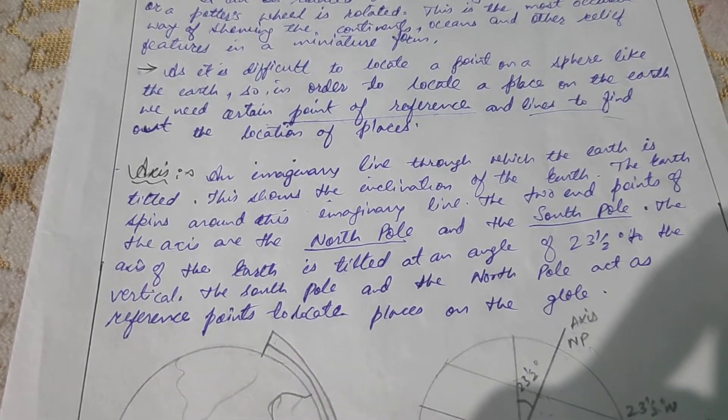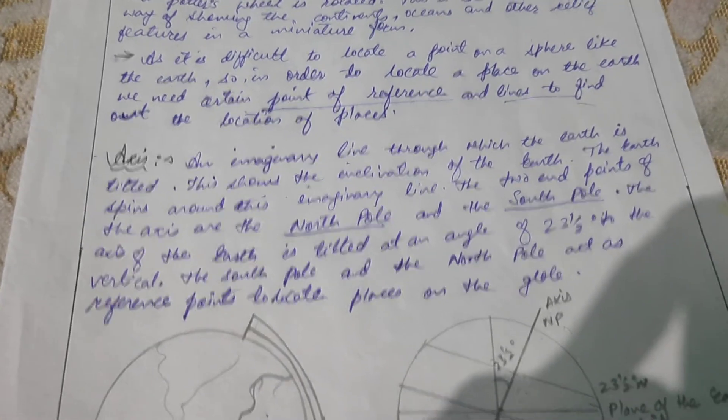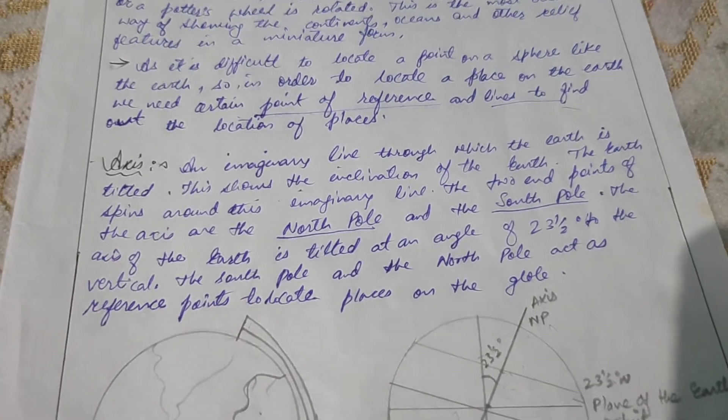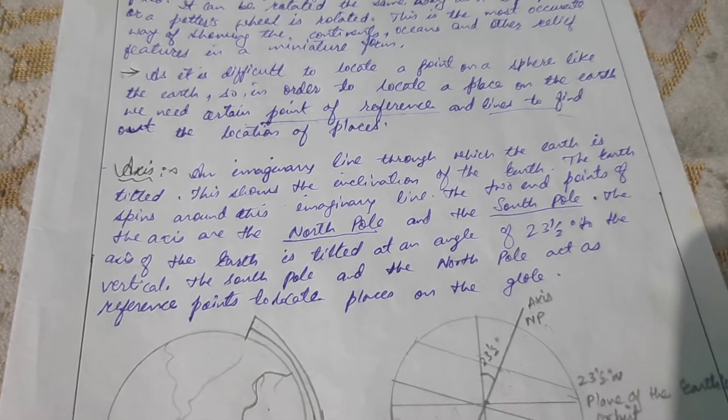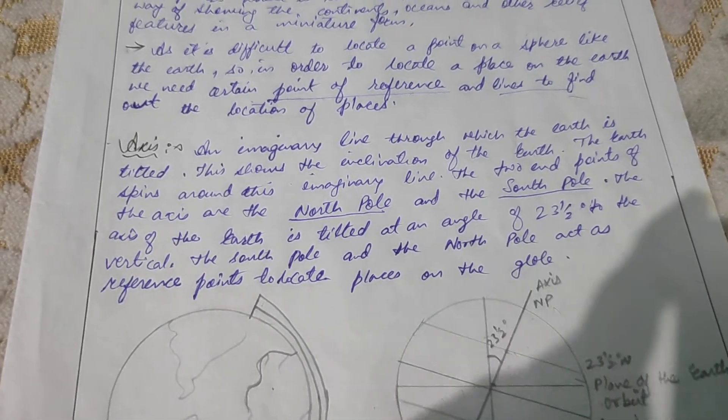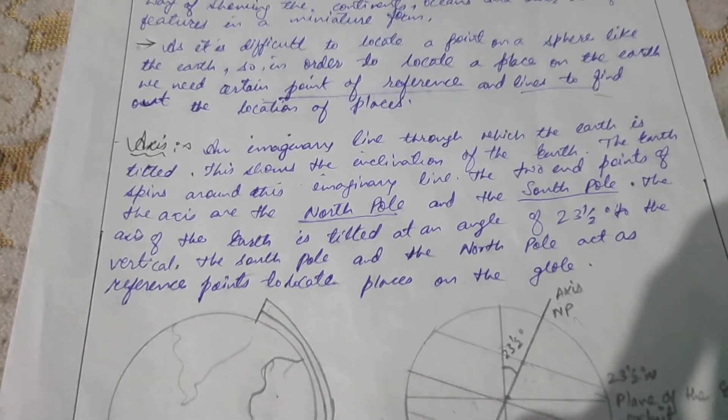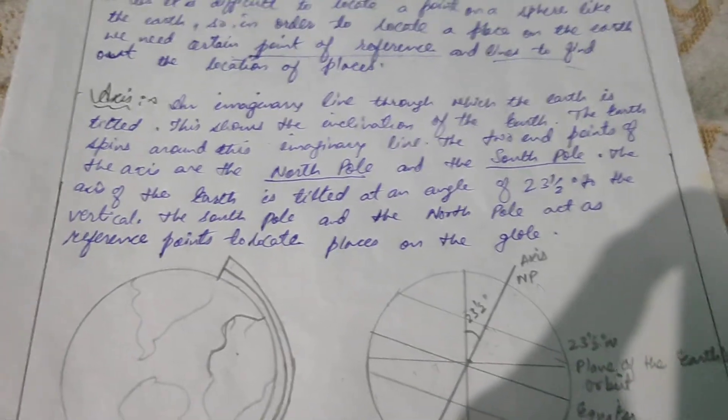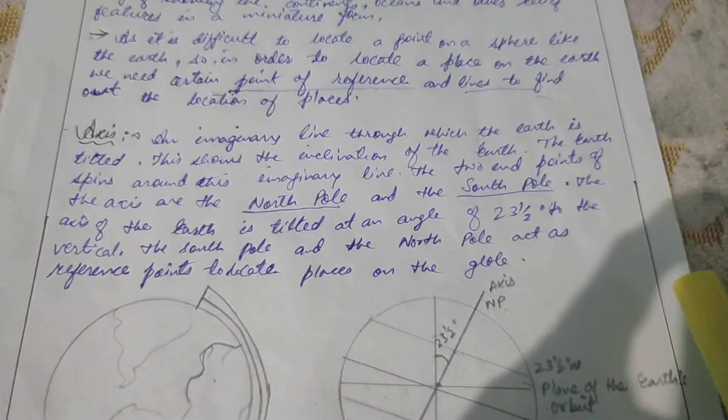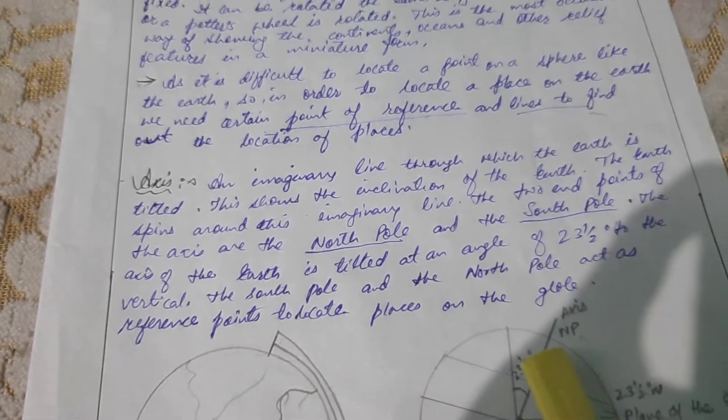What is axis? Axis is an imaginary line through which the Earth is tilted. This shows the inclination of the Earth. The Earth spins around this imaginary line. The two end points of axis are the North Pole and the South Pole. The axis of the Earth is tilted at an angle of 23.5 degrees to the vertical. The South Pole and the North Pole act as reference points to locate on the globe.